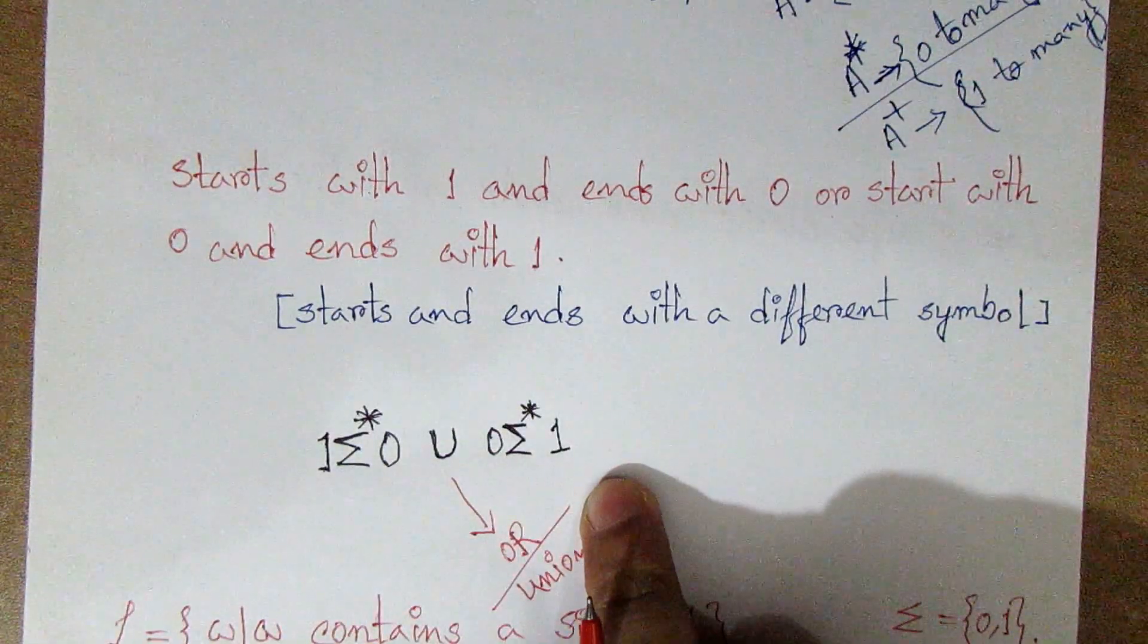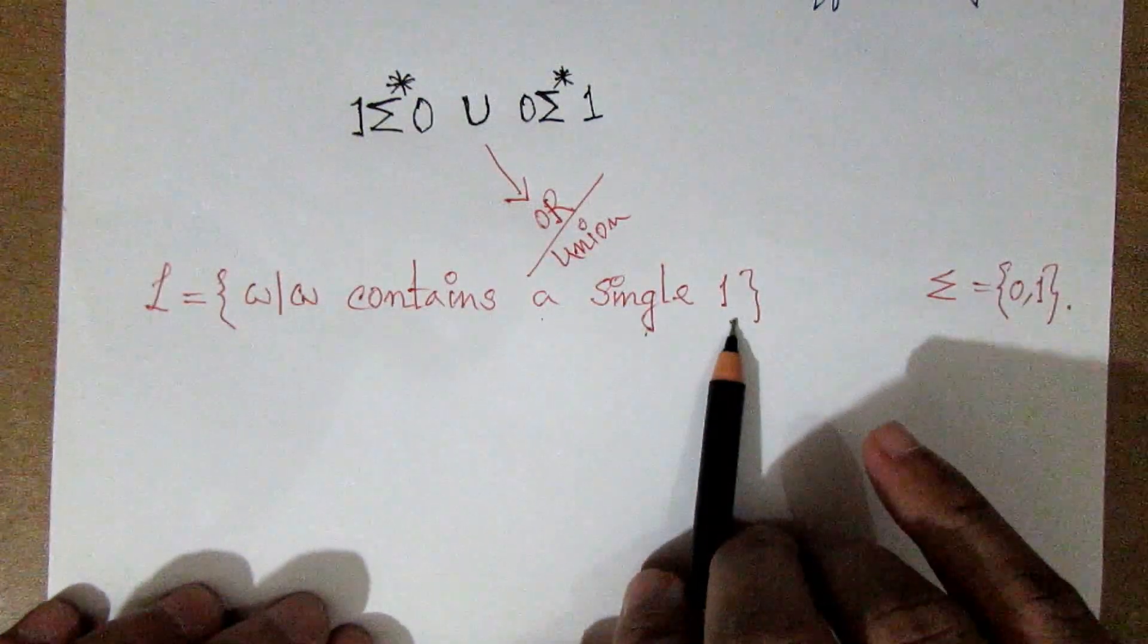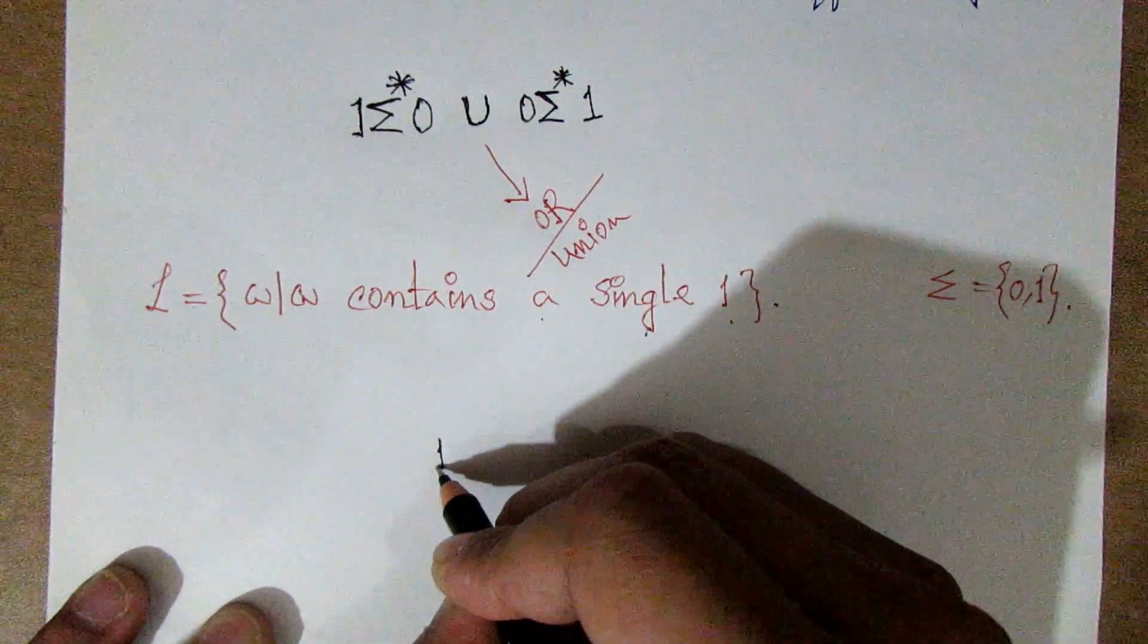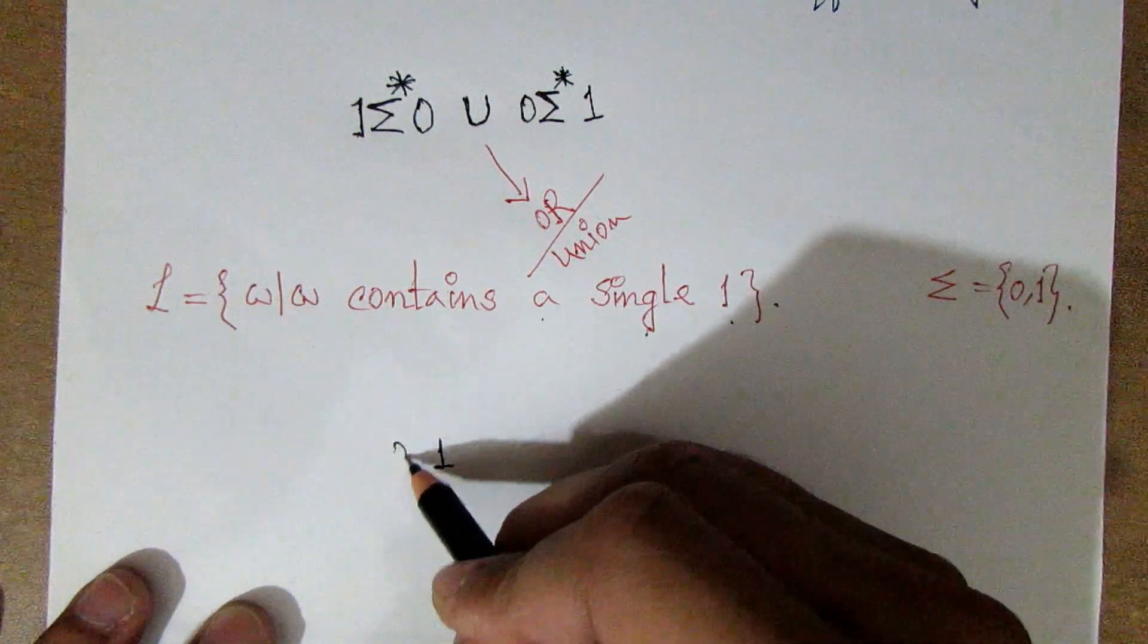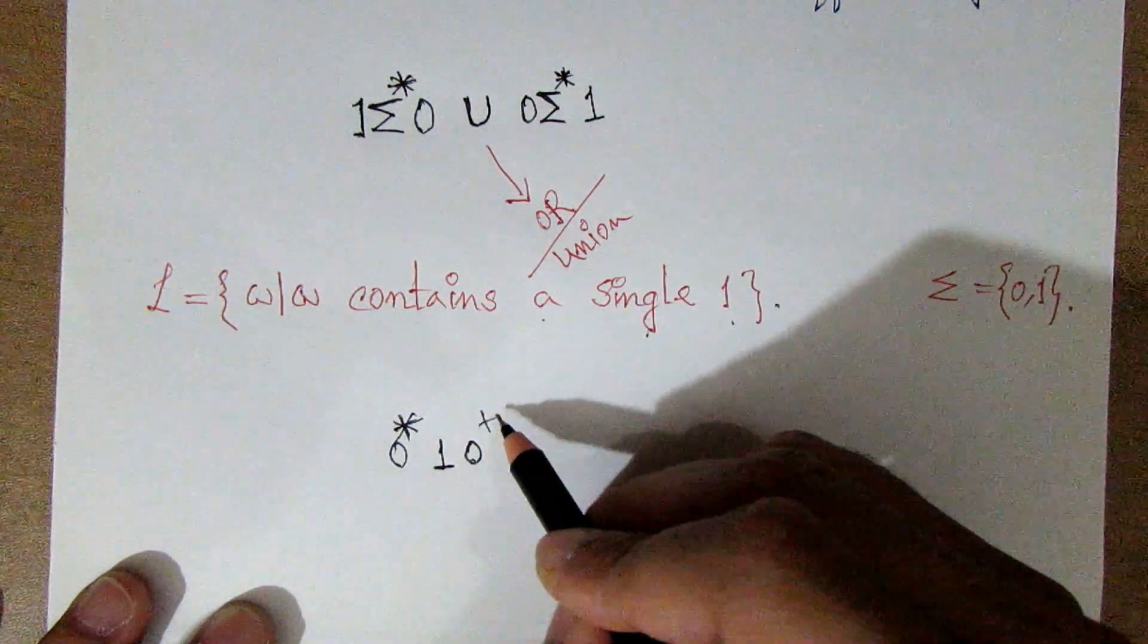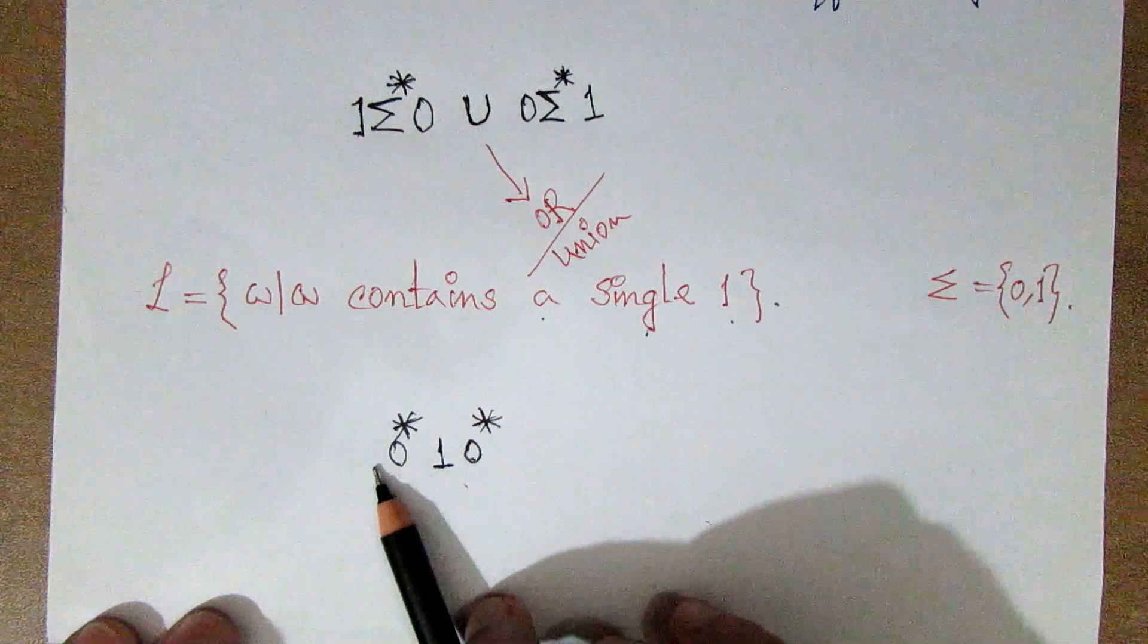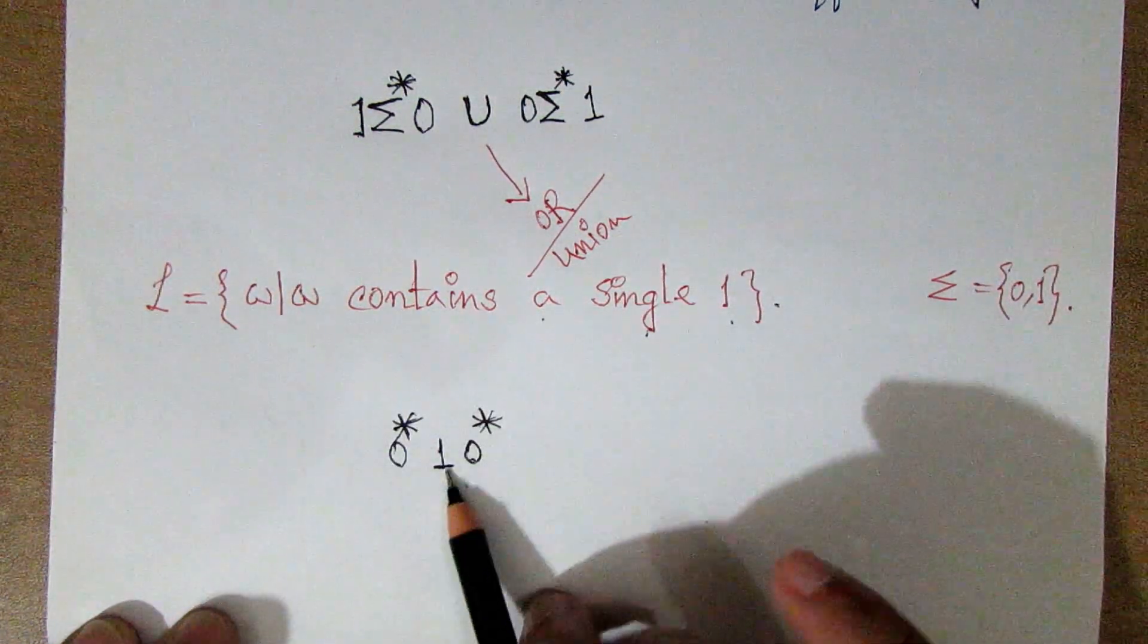In this condition, I will say the regular expression. The content is single 1. It is a single one. If 0 or 1 is 0, it may be 0 or not. This is the condition of this condition.